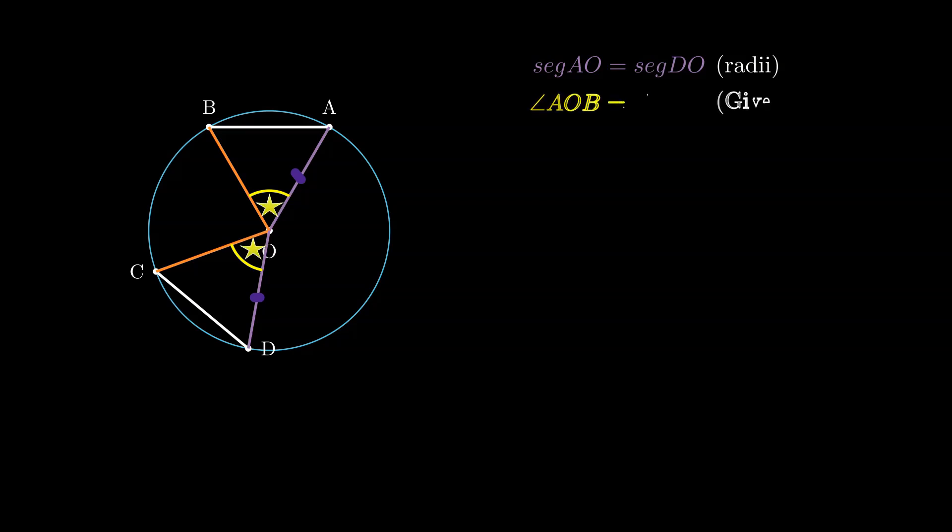Now to help our proof, we already know that angle AOB is given congruent with angle COD. Basically these are the angles which these two chords AB and CD are subtending at the center. And now for the triangles that we see, another pair of segments are congruent. Segment BO is equal to segment CO, and these two are also radii of the circle.